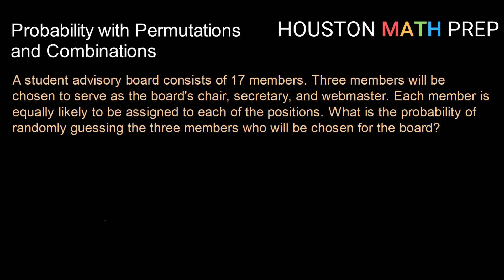So let's say a student advisory board consists of 17 members. Three members will be chosen to serve as the board's chair, secretary, and webmaster. Each member is equally likely to be assigned to each of the positions. What is the probability of randomly guessing the three members who will be chosen for the board?